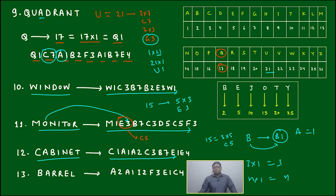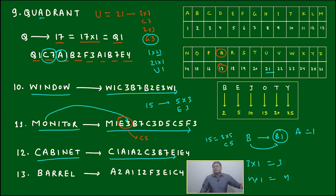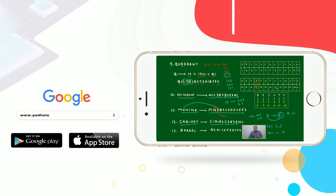This is only coding, and this is only programming. Don't think programming is something beyond this — we only have to convert logic into the language of the computer. Just as if you go to France, you must speak in the language they understand; similarly, you must convert logic into the language a computer understands. In the same way, CABINET can be represented in this format, and BARREL can be represented in another way.